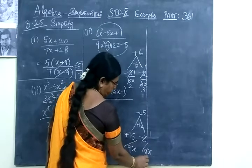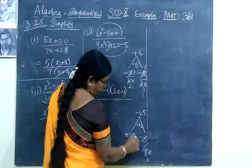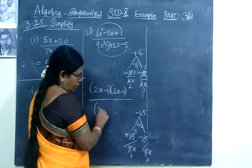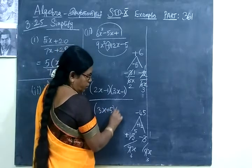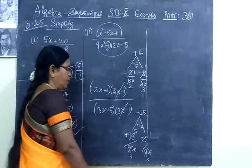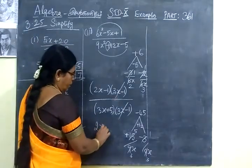So one time you get 3x. Then if you take 3 tables, 5 times, here 3 times. So you can write 3x plus 5, then 3x minus 1. So 3x minus 1, 3x minus 1 getting the answer. So the final answer, 2x minus 1 by 3x plus 5.